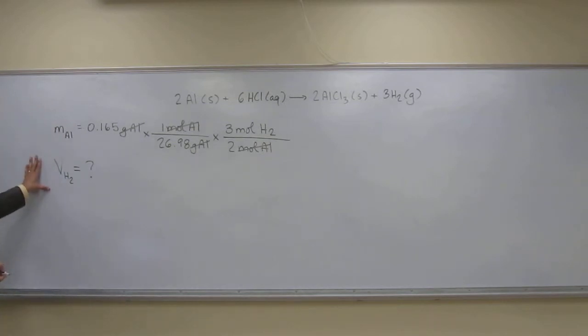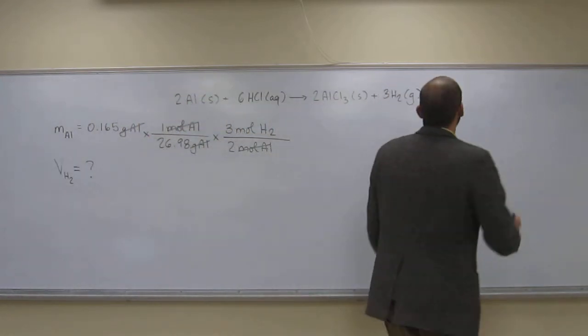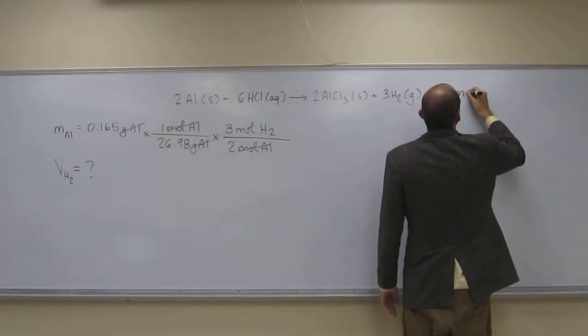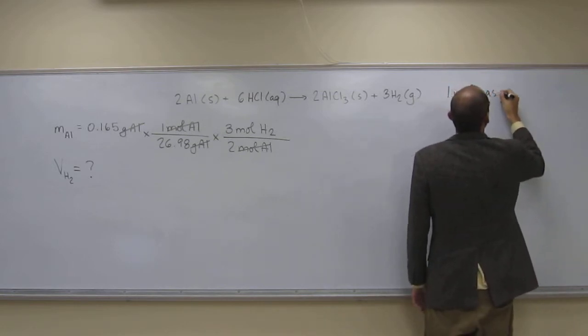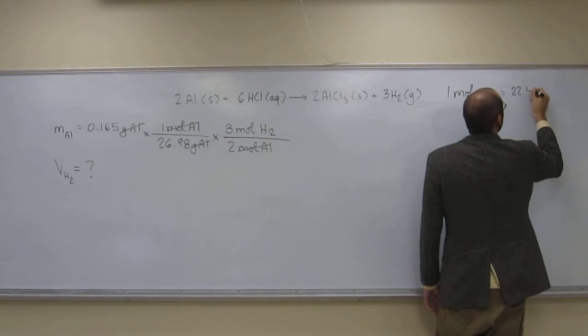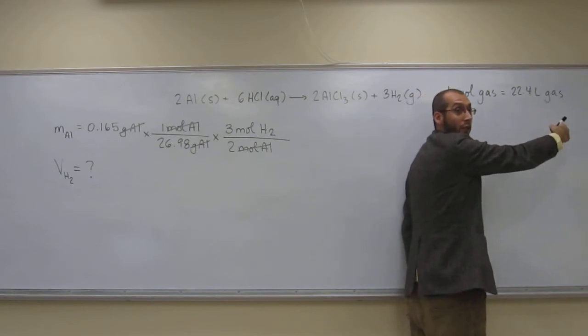Volume of hydrogen. Well, I have to give you that conversion factor in order to continue along, right? So one mole of any gas is 22.4 liters of gas. So one mole of hydrogen is 22.4 liters of hydrogen.